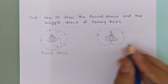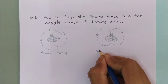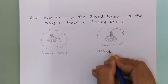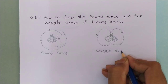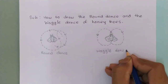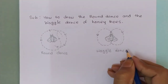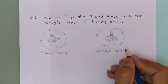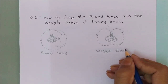This is the waggle dance. At last we are done with the round dance and the waggle dance. If you like this video then hit the like button and subscribe to my channel for more videos like this. Thank you for watching this video.